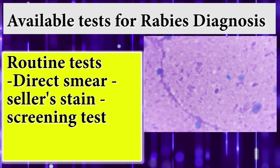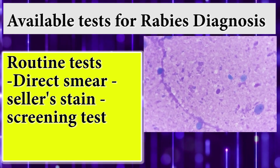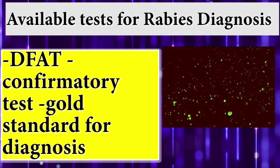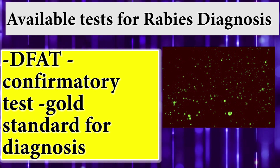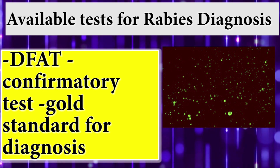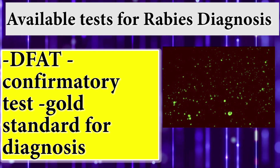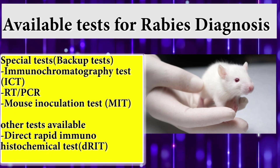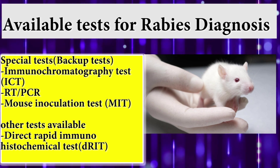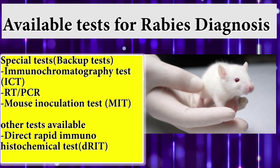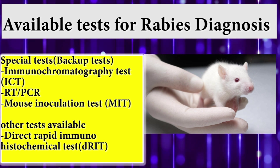Available tests for rabies diagnosis. Routine tests include: direct smear, and direct fluorescent antibody test — which is the confirmatory test and the gold standard for diagnosis. Special tests include: immunohistochemistry test, RT-PCR, and mouse inoculation test. Other tests available include the direct rapid immunohistochemistry test.